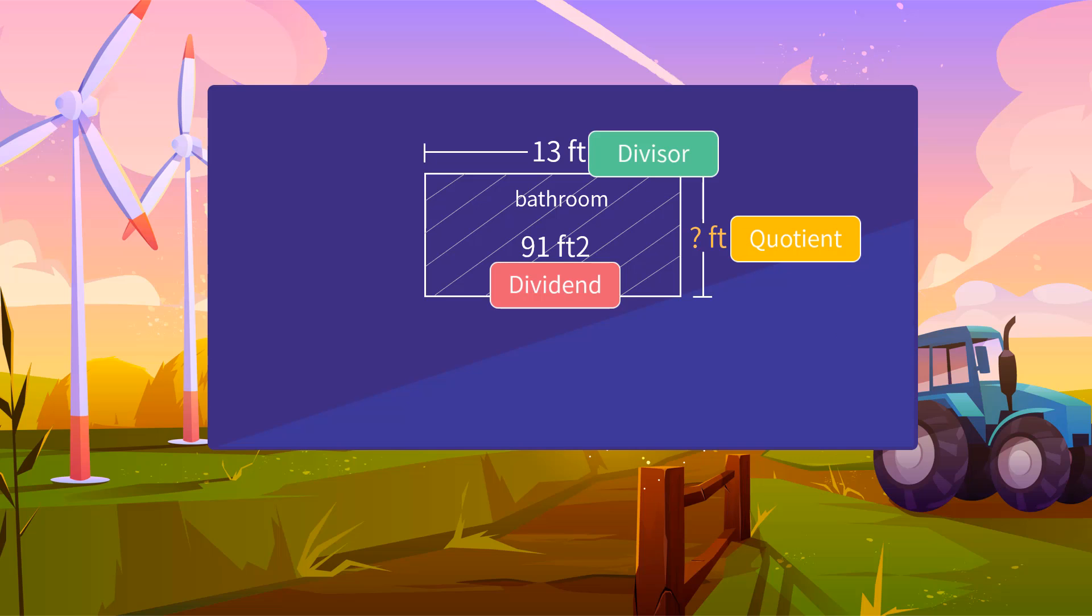The length is 13 feet. By assigning them to the rectangular area formula, we can find that the width of the bathroom is 91 divided by 13. By doing simple division, we can know that the quotient is 7.